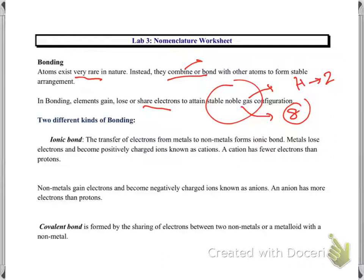The first one is ionic bonding. In ionic bonding, metals lose electrons and non-metals gain electrons, and they make an ionic bond.